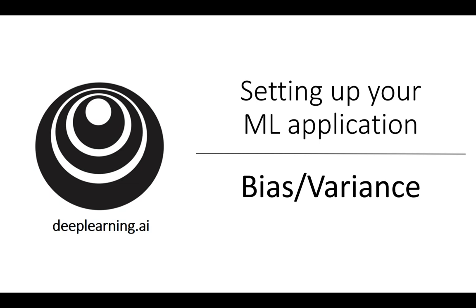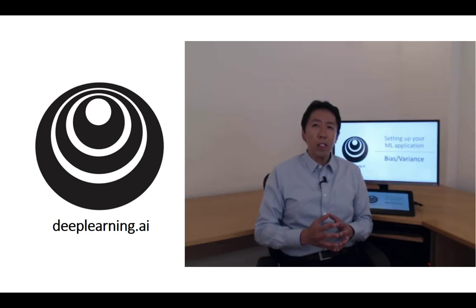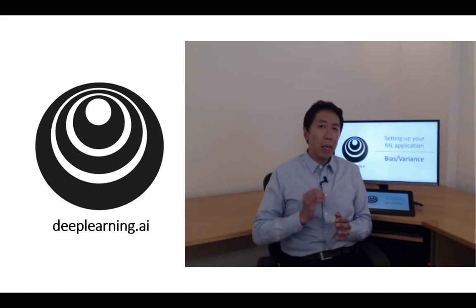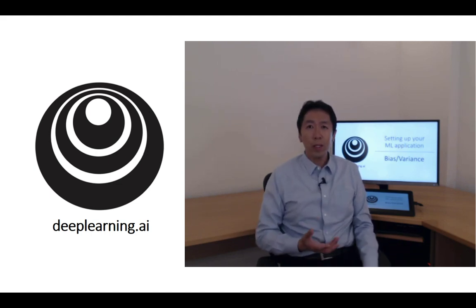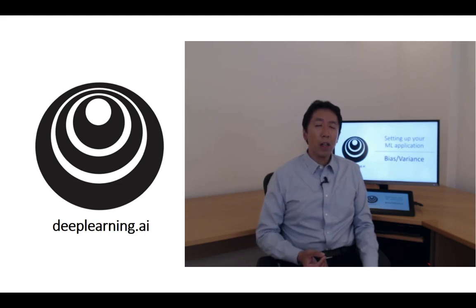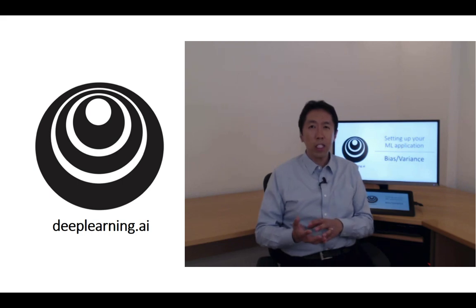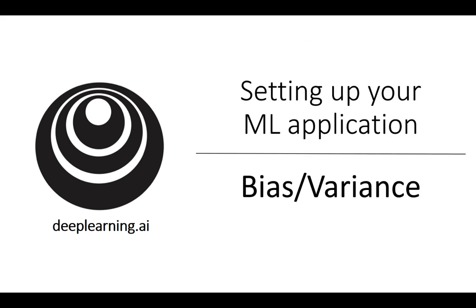I've noticed that almost all the really good machine learning practitioners tend to have a very sophisticated understanding of bias and variance. Bias and variance is one of those concepts that's easy to learn but difficult to master. Even if you think you've seen the basic concepts, there's often more nuance to it than you'd expect. In the deep learning era, another trend is that there's been less discussion of what's called the bias variance trade-off. We'd still talk about bias, we still talk about variance, but we just talk less about the bias variance trade-off.